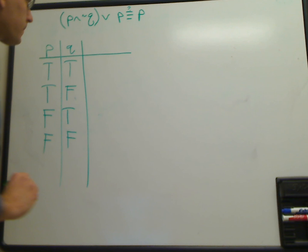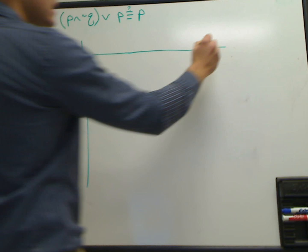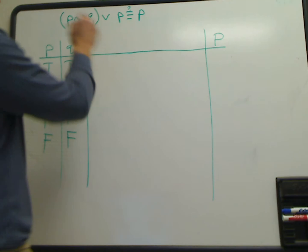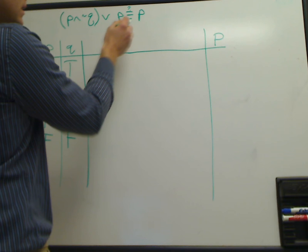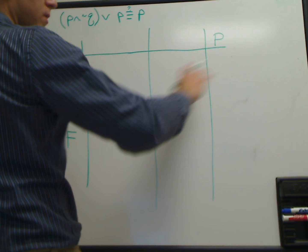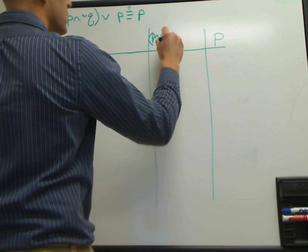And then on the right side we need to show that P, or we want to see if we can show that P is logically equivalent to the larger statement on the left. So I want to have two columns over on the far right side to show that each of the rows are identical. So I'm just going to write this up here: (P and not Q) or P.